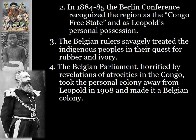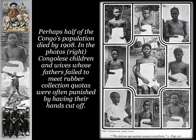The Belgian leaders savagely treated the indigenous peoples in their quest for rubber and ivory. Rubber was a raw material increasingly needed once automobiles were being built, and ivory was also a valuable resource. The Belgian parliament was horrified by the revelations of atrocities in the Congo and took the personal colony away from King Leopold in 1908, making it a Belgian state colony rather than the king's personal possession.